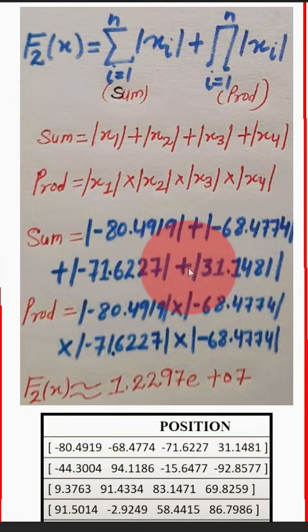Then we will put the values here. For x1 we have minus 80.4919 for the first case and put the value for each dimension. Same we will do for the product.